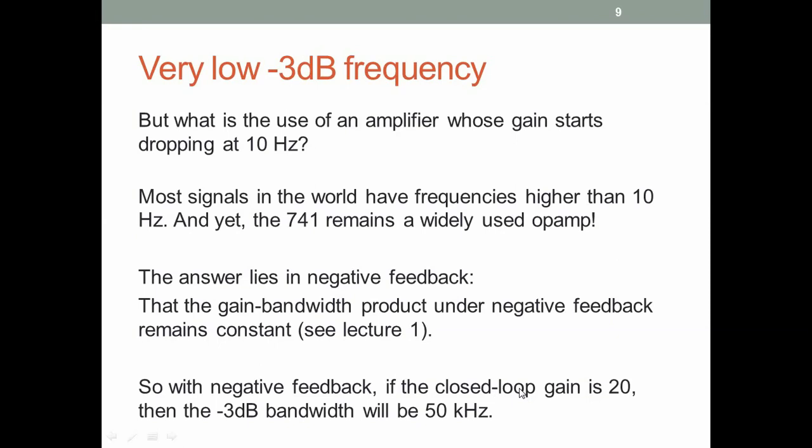The op-amp used in the buck converter assignment may have had much higher unity gain frequencies, because technology has evolved allowing higher bandwidth than 1 megahertz. The 741 was first built in 1967 or so; things have improved, though not a lot.